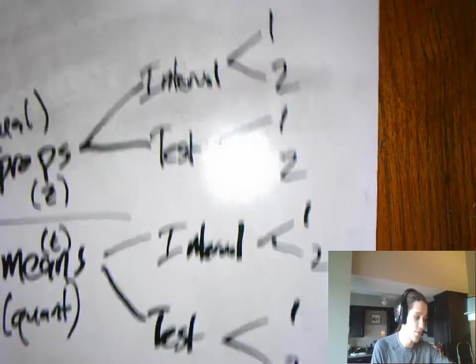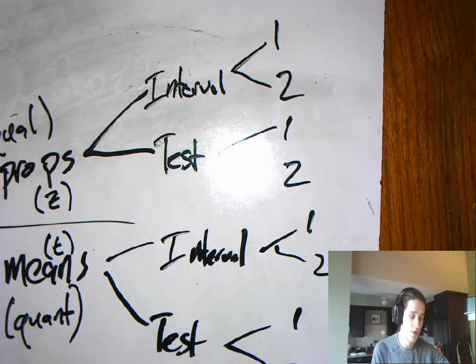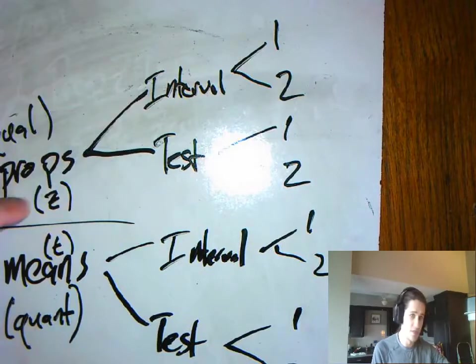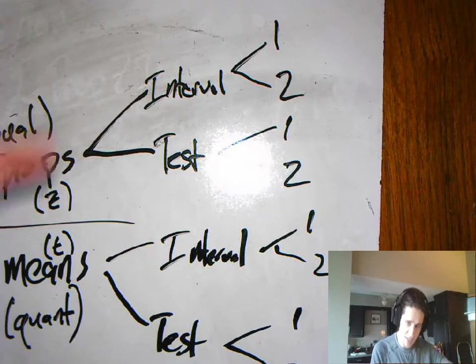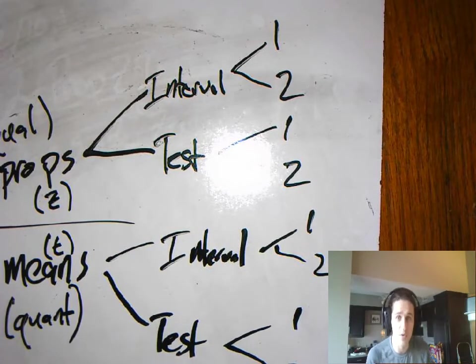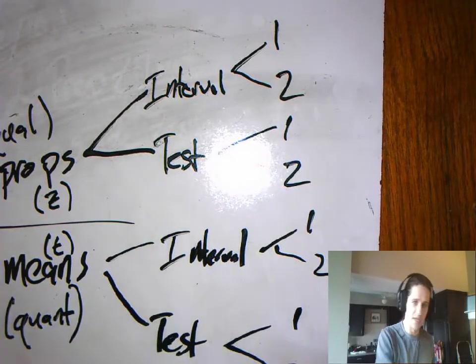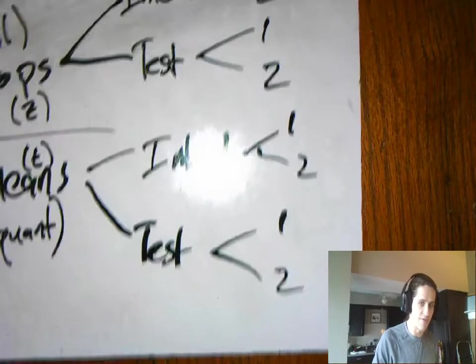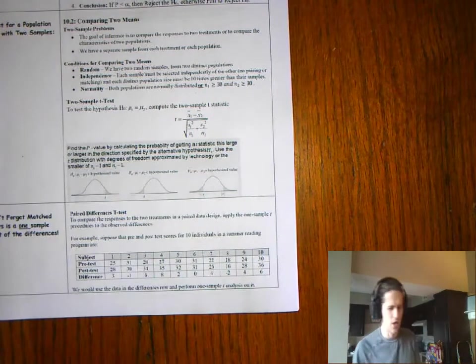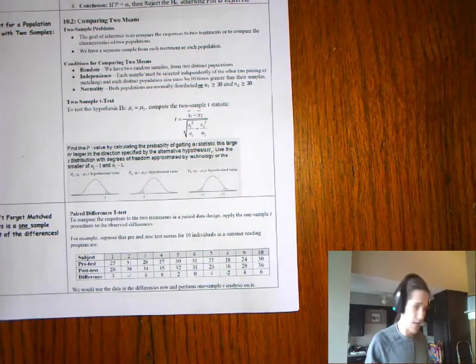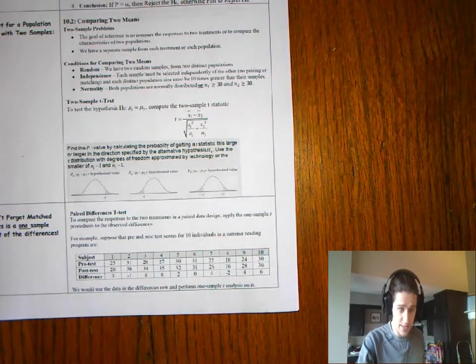I'm going to go interval or test. And then the last thing we're going to have to consider, is it one sample or two samples? One sample or two samples? Down here on the bottom, interval test. The cats are chasing. Test. And then one, two, one, two. And we have a name for each one of these processes. That's the challenge here.